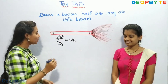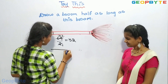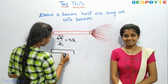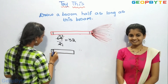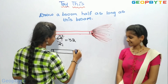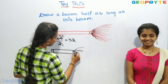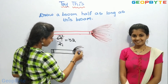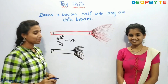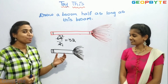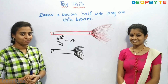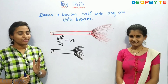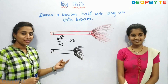Now we will draw the broom. We have drawn the broom with half the length of the original broom. This broom is 64 cm, and half of 64 is 32. So I have drawn this broom with 32 cm.